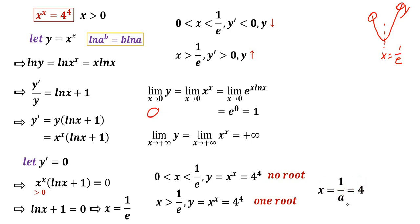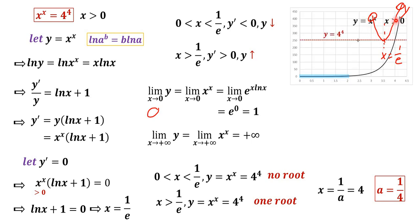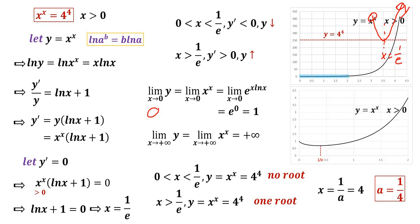Since x equals 1/a, and x = 4 is the unique solution, a = 1/4 is the only solution to the original equation. Looking at the graph of y = x^x, the horizontal line at level 4^4 has exactly one intersection with the curve, corresponding to x = 4. Zooming in confirms y decreases before x = 1/e and increases after.